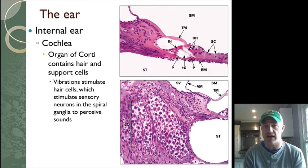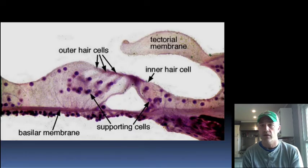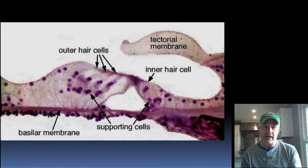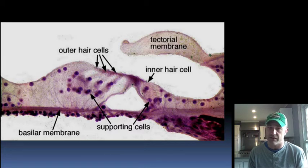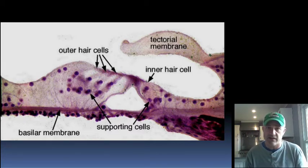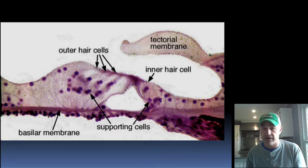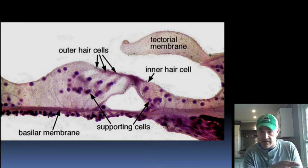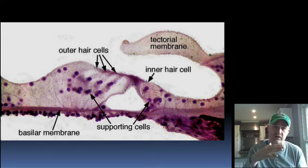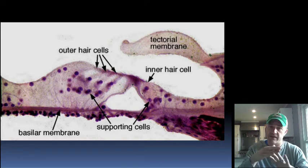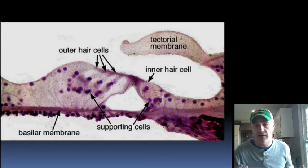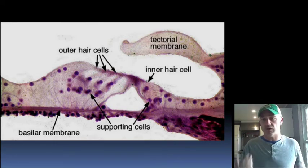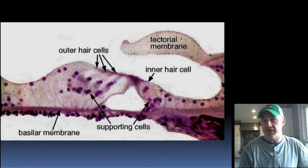Looking at a more zoomed-in slide, you can again see the tectorial membrane, and while the villi coming up from the hair cells aren't clearly visible, you can see the outer and inner hair cells. The basilar membrane is visible below, and it's the extensions of those hair cells being pushed up into the tectorial membrane that generates the nerve impulse causing you to perceive hearing a sound.